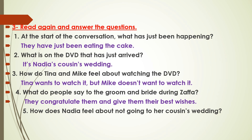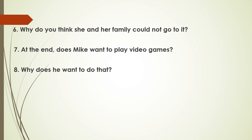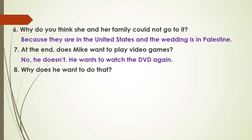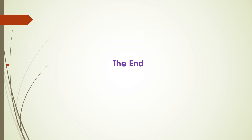Number five: how does Nadia feel about not going to her cousin's wedding? She feels sad. Number six: why do you think she and her family could not go? Because they are in the United States and the wedding is in Palestine. Number seven: at the end, does Mike want to play video games? No, he doesn't — he wants to watch the DVD again. Number eight: why does he want to do that? Because he thought it was fantastic. Thanks for listening — I hope you've understood the lesson.